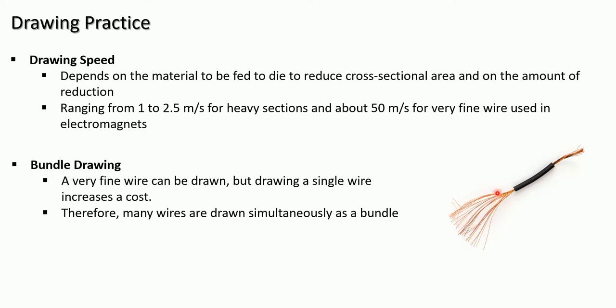Instead of drawing wires one by one, these wires are drawn in a group — that means bundles of wire are drawn, which is called bundle drawing. A very fine wire can be drawn, but drawing a single wire increases the cost. Bundle drawing is carried out to improve productivity and decrease the cost of drawing. Therefore, many wires are drawn simultaneously as a bundle.